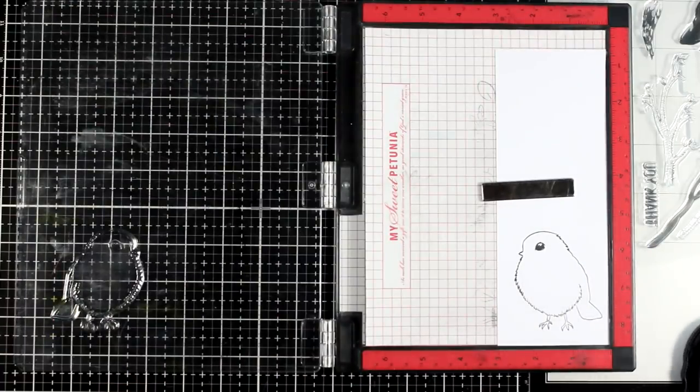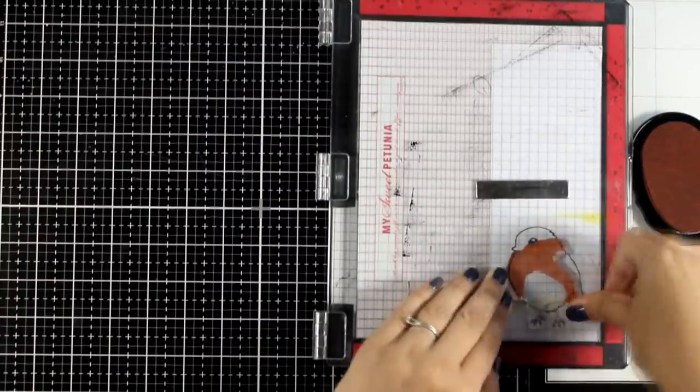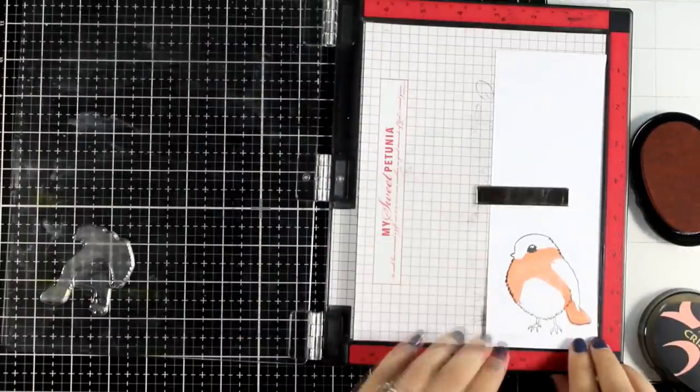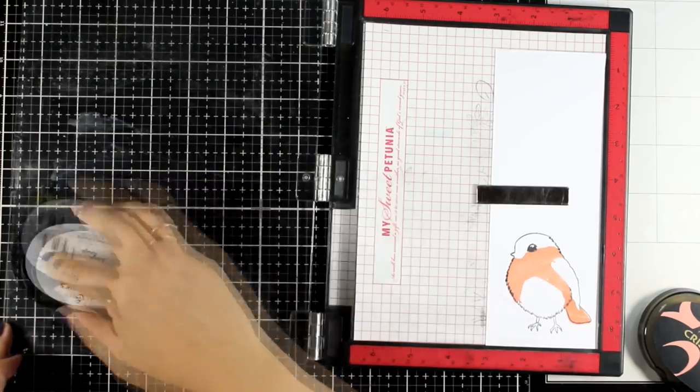So I'm stamping the first layer which is just the outline. And then it gives you many different layers that you can play with, with different colors of ink.